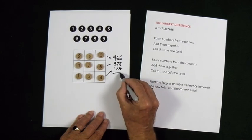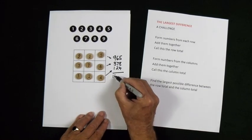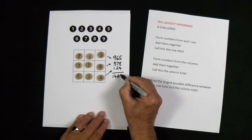I'm now going to add those numbers together to get the total. One, four, six, seven.